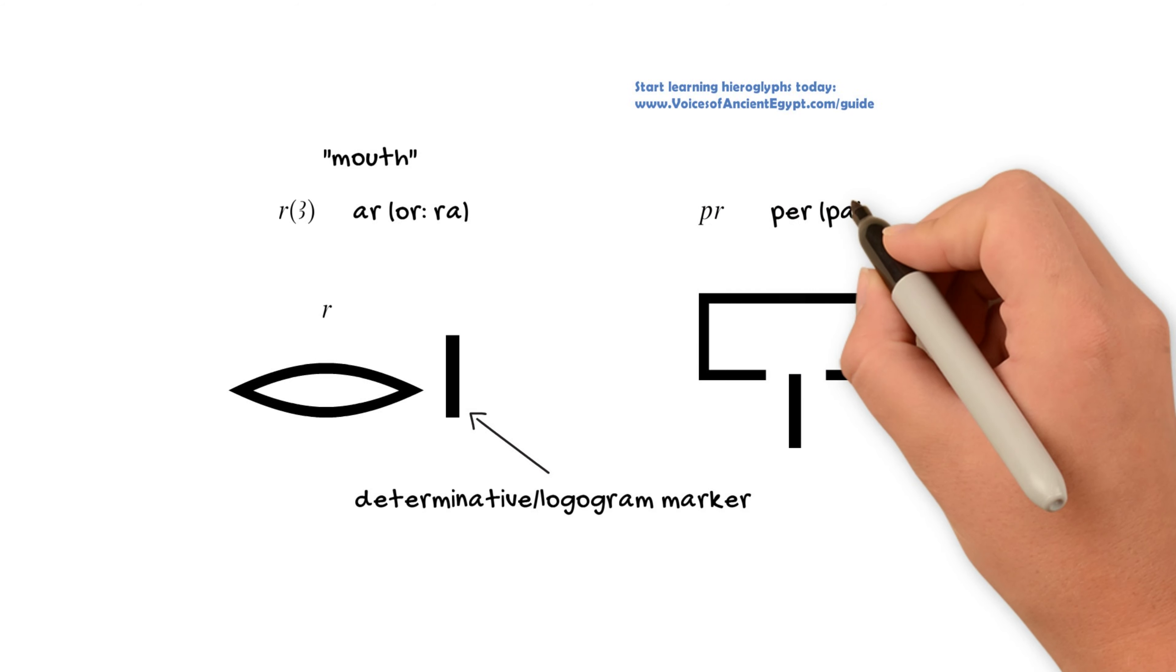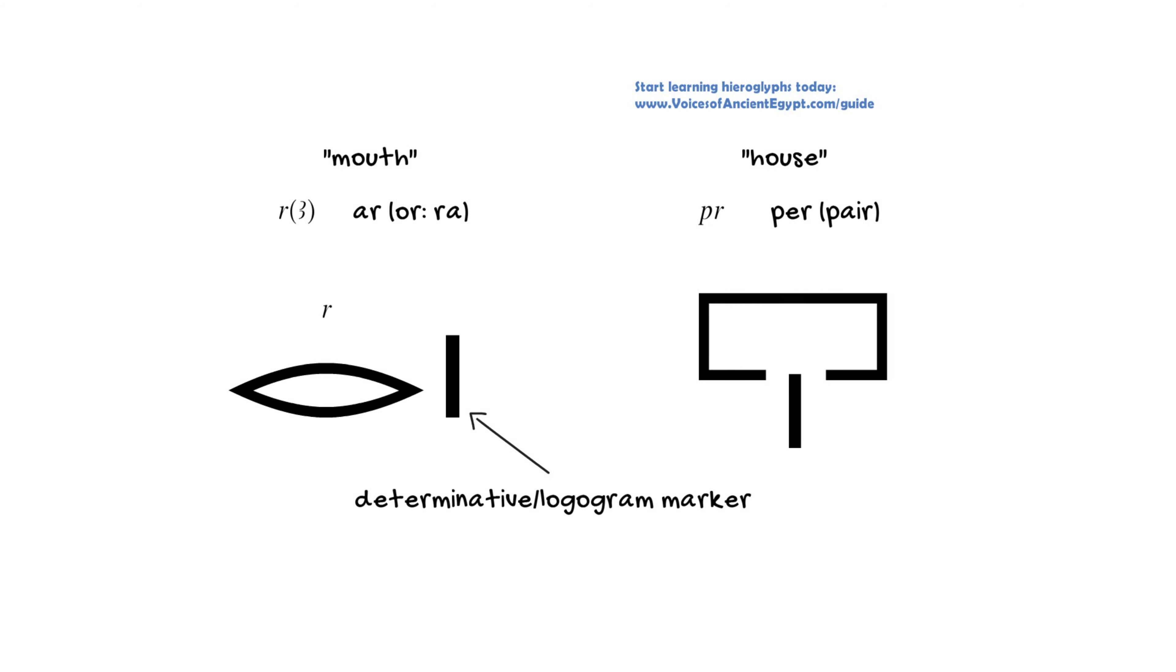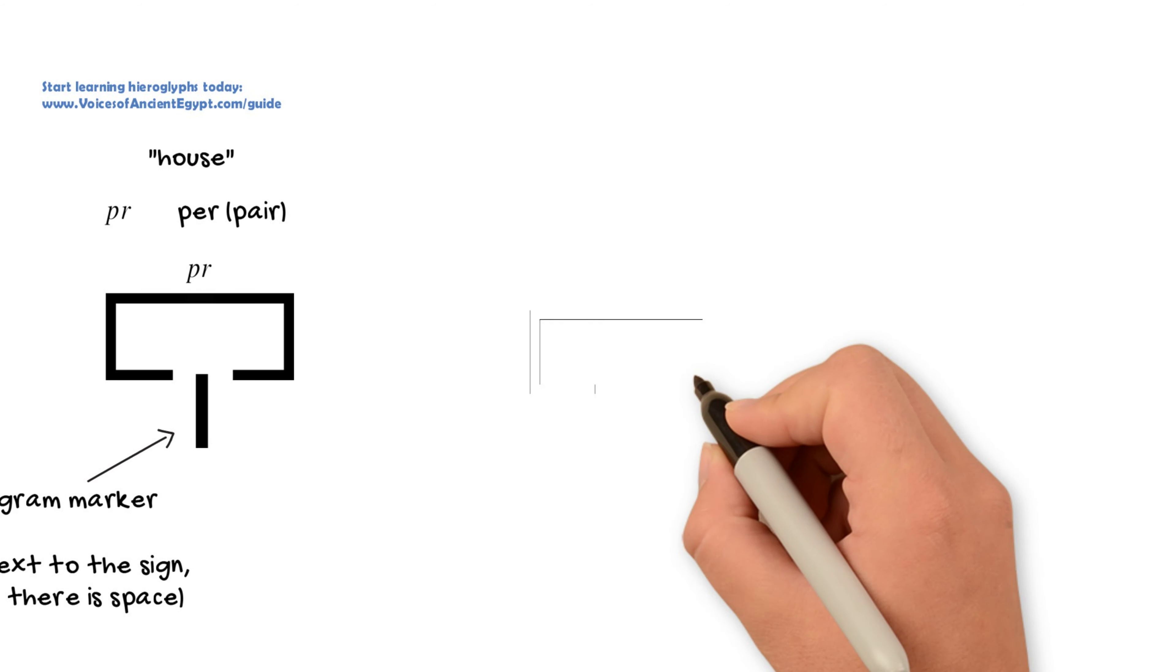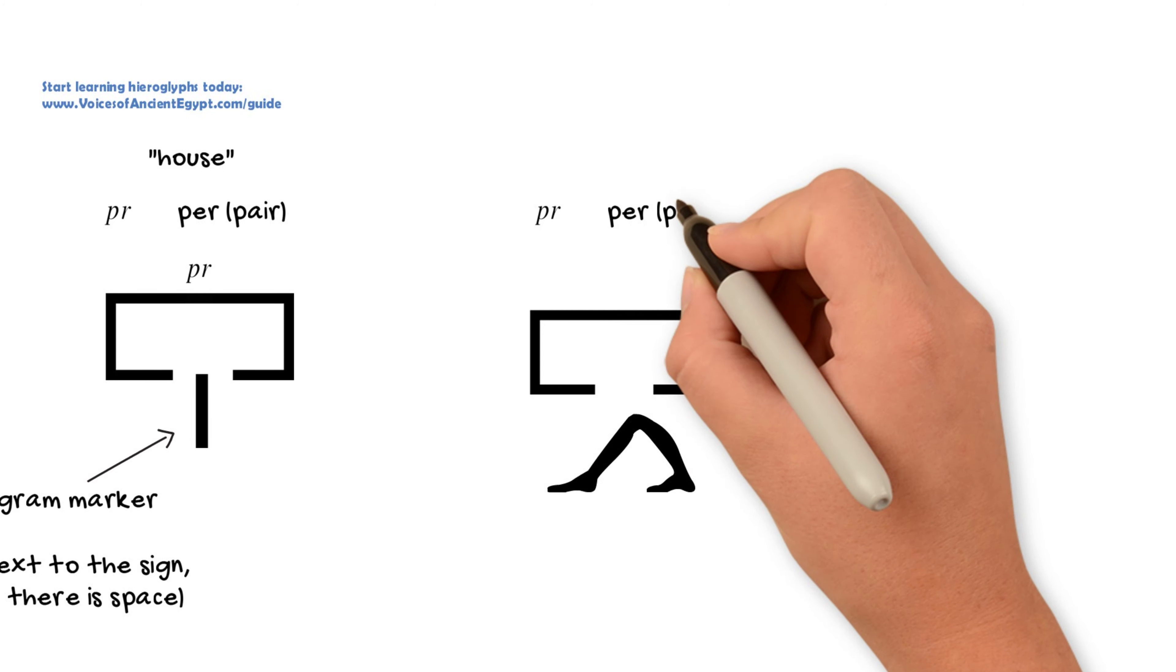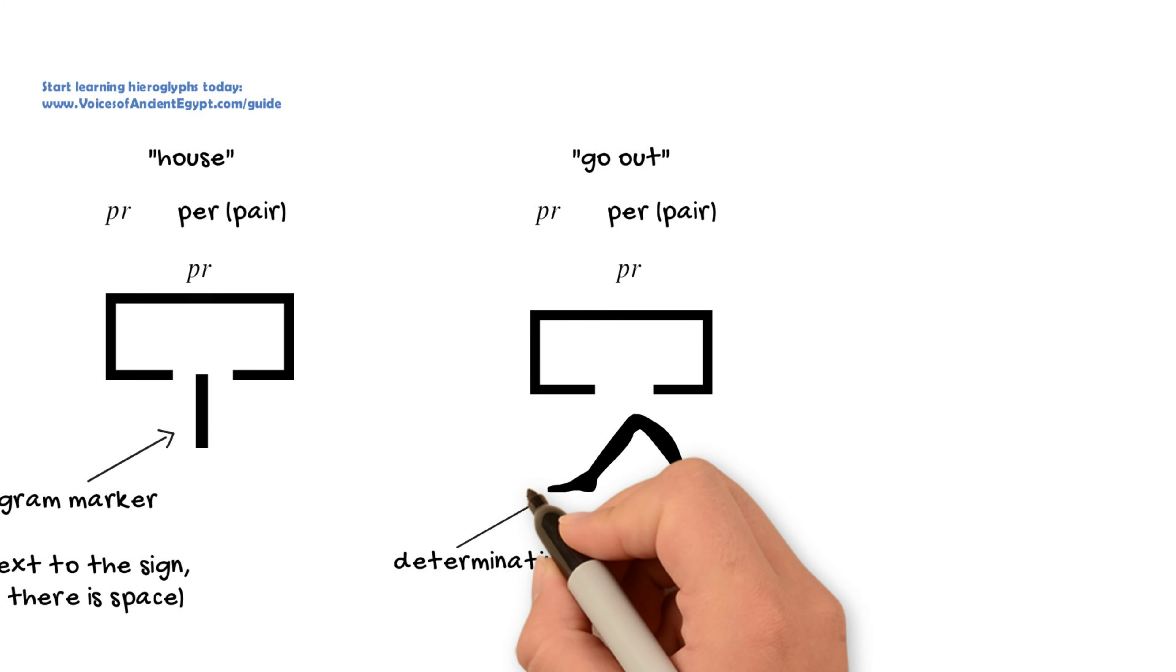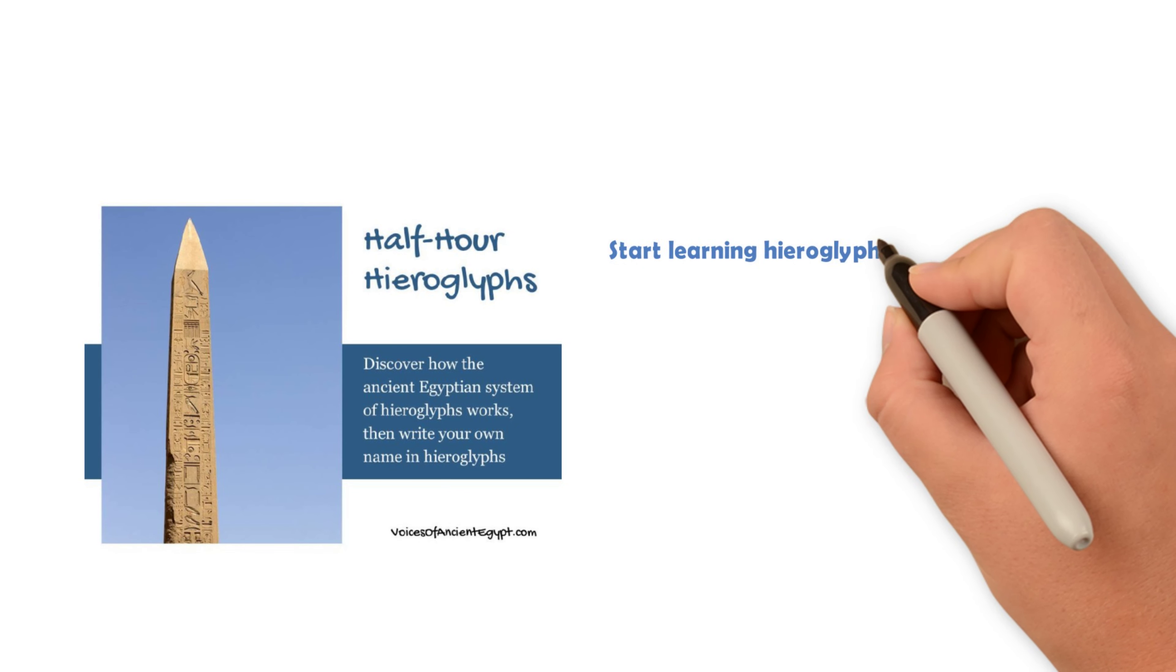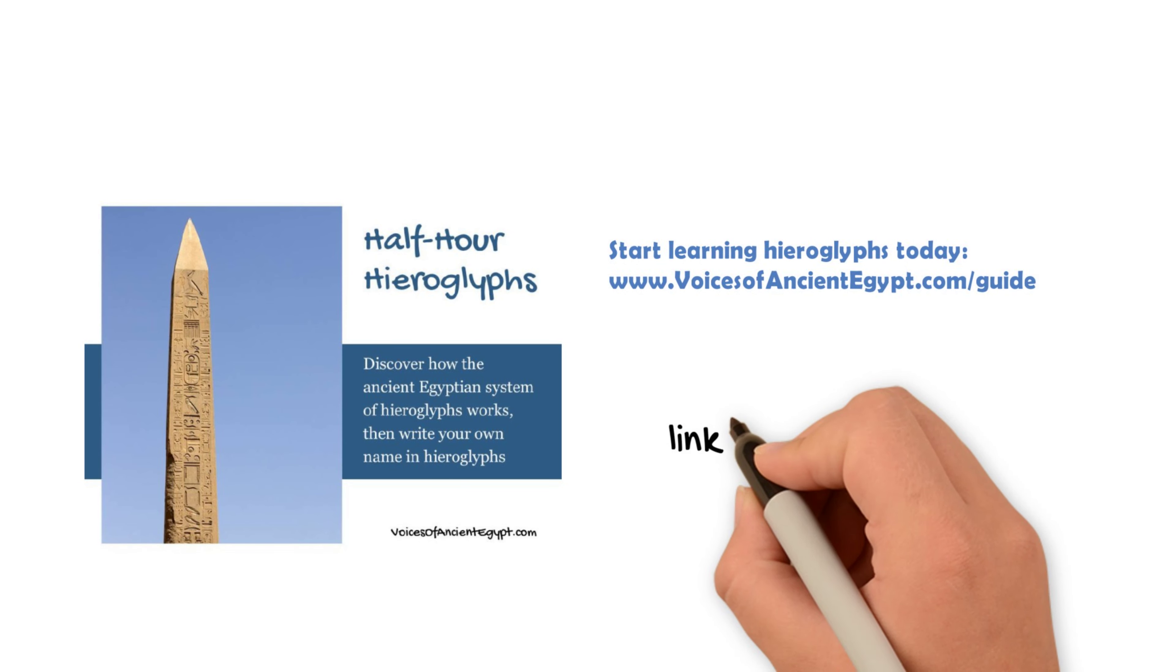For example, if you have the house sign, which is per (PR), the dash in this case is letting you know that we're using this simply as the word for house rather than another word that you might use per in, such as go out, which has instead the determinative of the walking legs. If you're not familiar with what a determinative is, I do recommend you pick up my Half-Hour Hieroglyphs guide. It's free and I'll link that in the description.